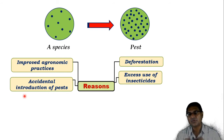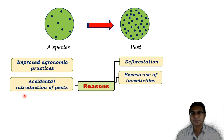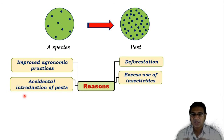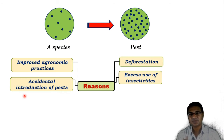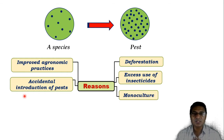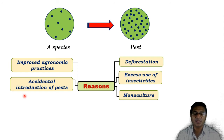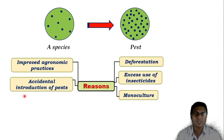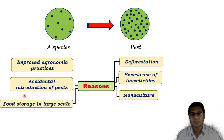Another point is accidental introduction of pests which come from foreign countries with imported food materials. When they are introduced in our country they create severe problems not only to one crop but to others as well. Examples of accidentally introduced pests in our country include the potato tuber moth, diamondback moth, and cottony cushion scale. Another reason is monoculture — continuous cultivation of the same crop in an area which is a favorable situation for that pest, causing their population to continuously increase.